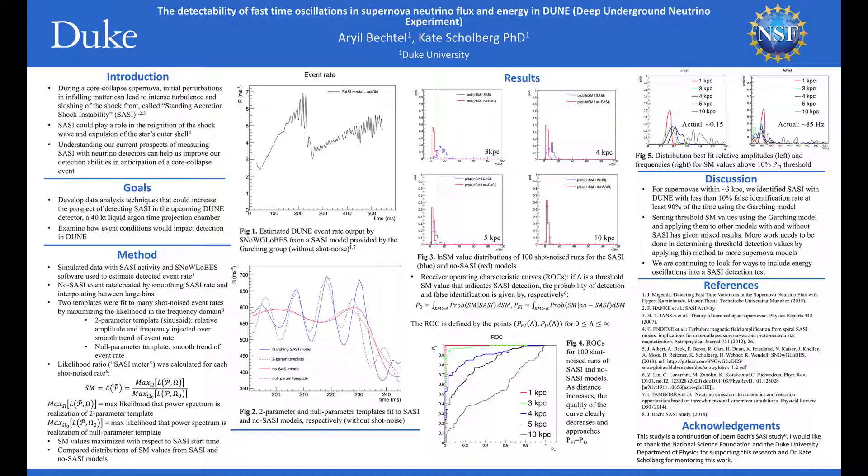Many two-dimensional and three-dimensional simulations of core-collapse supernova predict a sloshing of a stalled shock front just before an explosion of matter, a phenomenon called SASI.